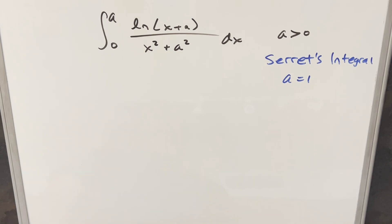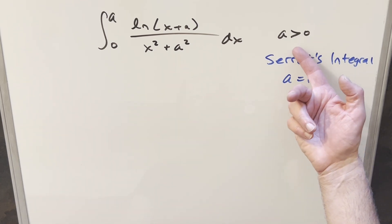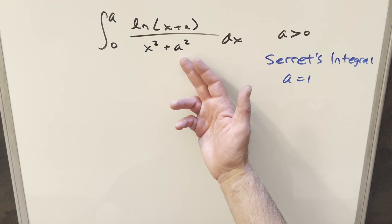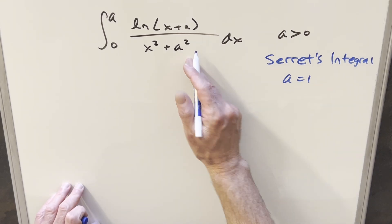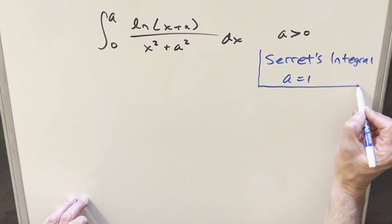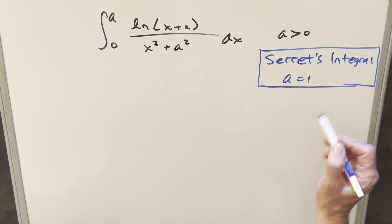Okay, we've written another integral. We've got the integral from 0 to A, natural log x plus A over x squared plus A squared dx. And I've actually created this condition that A needs to be greater than 0. It kind of makes sense with this term being squared, the bounds and everything. One quick note on this: